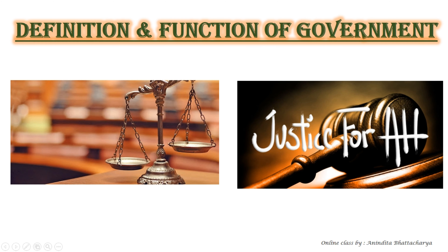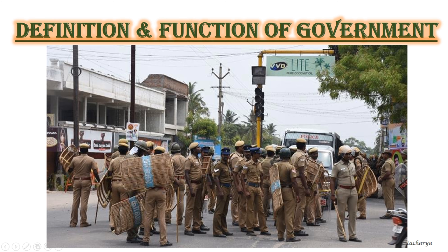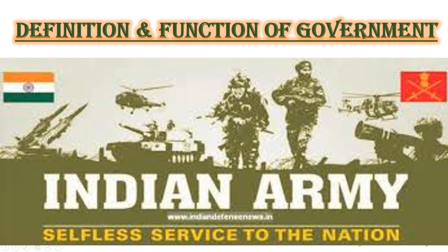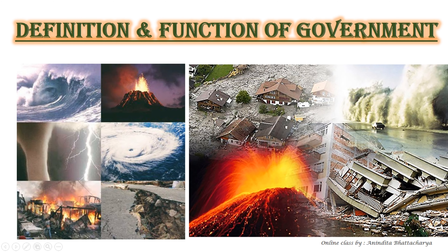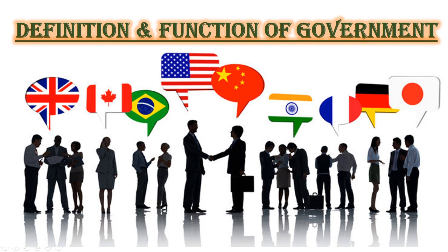The government provides justice to the people and governs the country according to the laws of the land. Through the police, it maintains law and order. Through the army, it protects the boundary of the country. It also provides relief and funds to people affected by natural disasters such as floods, earthquakes, droughts, and tsunamis, and maintains peaceful international relations.